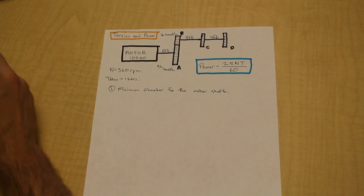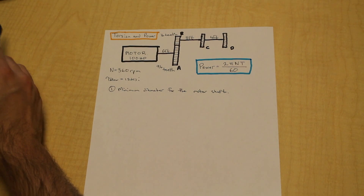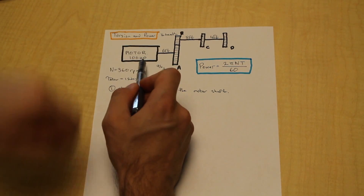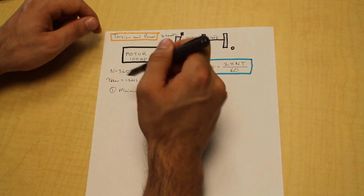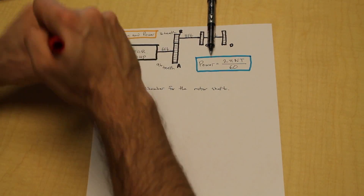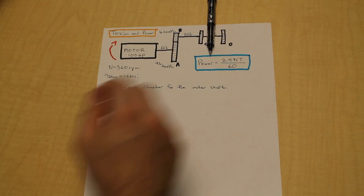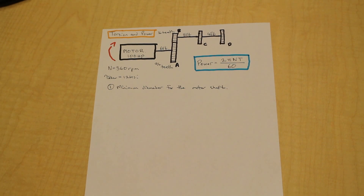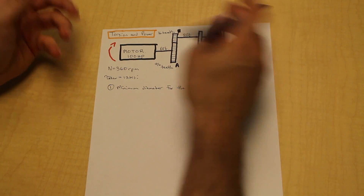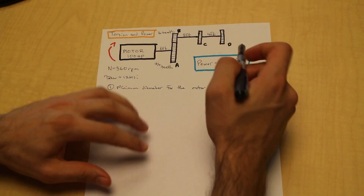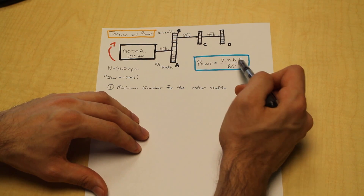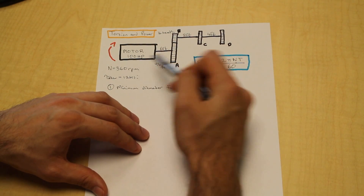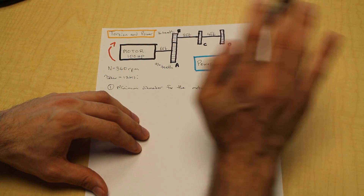Given in the question is the power being transmitted by the motor to the shaft, and that horsepower is 100. We're going to assume a positive direction for the power being transmitted by the motor — that's the 100 horsepower. Also given in the question is the speed, and the speed is almost always given in RPM, or revolutions per minute. Don't convert revolutions per minute to seconds or anything — leave it as RPM. This equation uses RPM units as N, and it's 360 RPM. Don't convert that, because you'll get the question wrong.